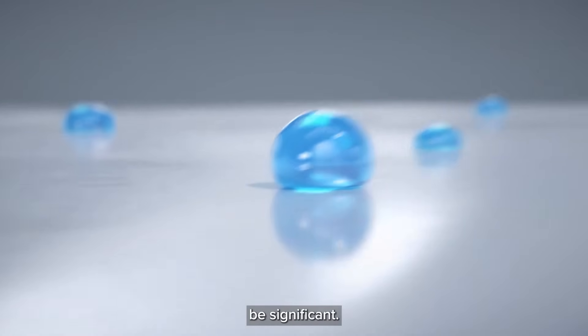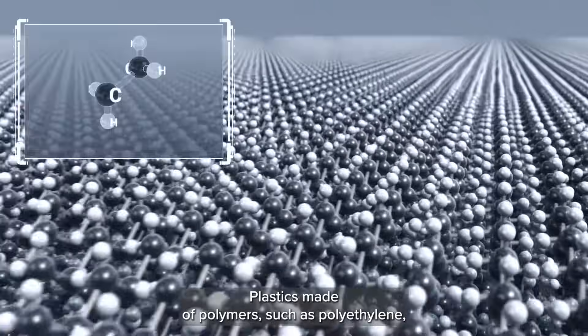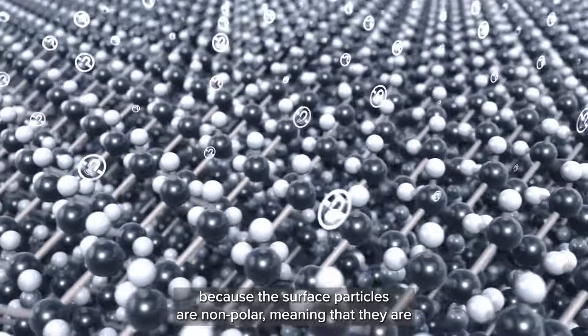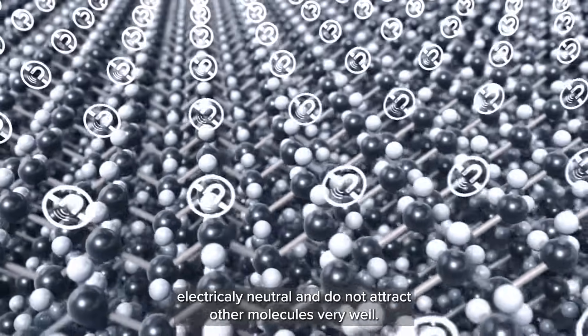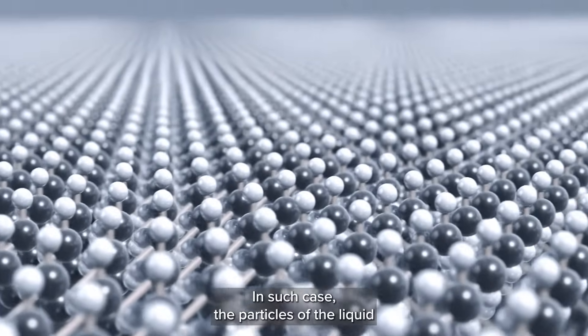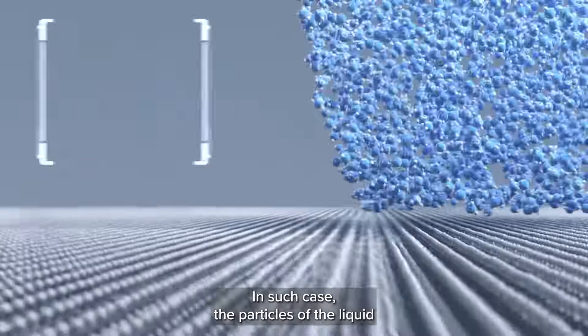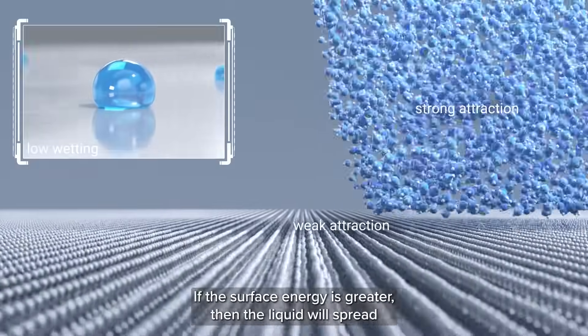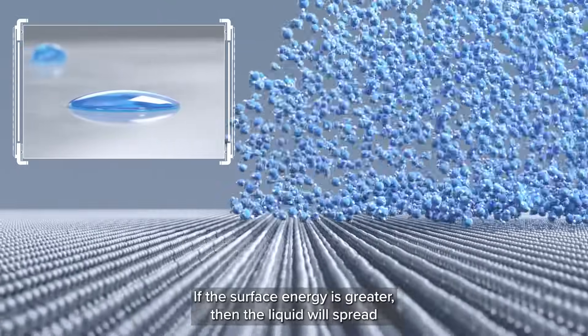Plastics made of polymers, such as polyethylene, have low surface energy because the surface particles are non-polar, meaning they are electrically neutral and do not attract other molecules very well. In such cases, the particles of the liquid are attracted more strongly to each other than to the surface. If the surface energy is greater, then the liquid will spread and consequently wet the surface better.